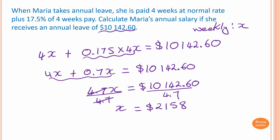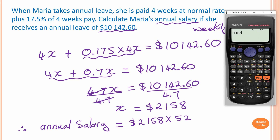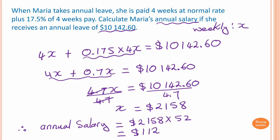But the question is asking for annual salary, which means the whole year. So therefore annual salary equals $2,158 times 52, because $2,158 is her weekly salary. The answer is $112,216. Thank you so much for watching.